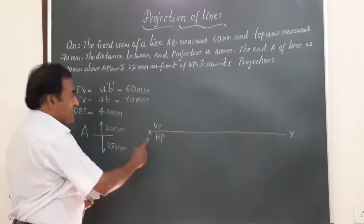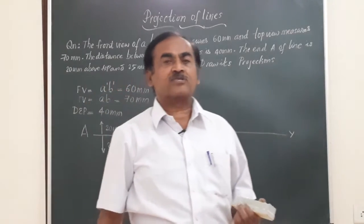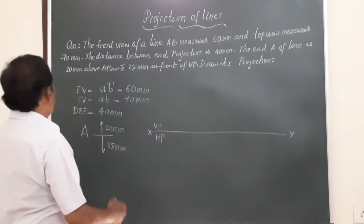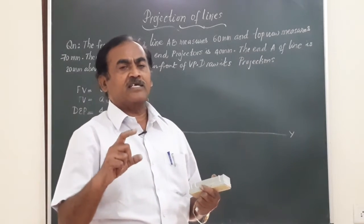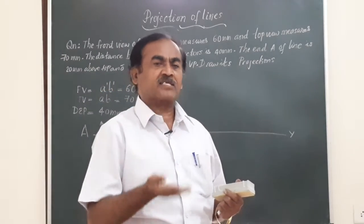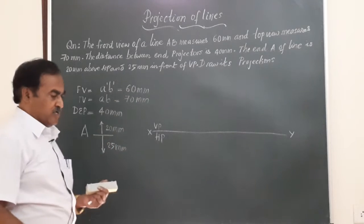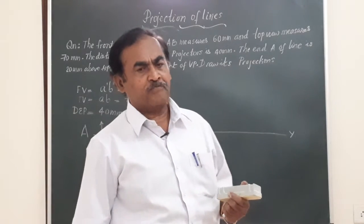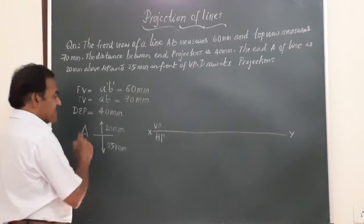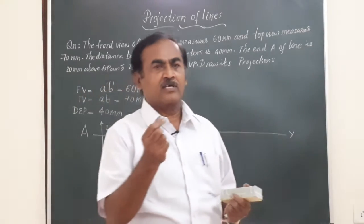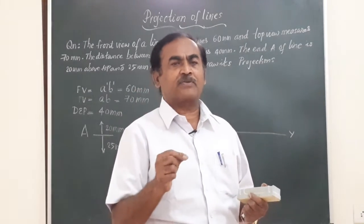The line of intersection of the vertical plane with the horizontal is called the XY line. Friends, in any problems on the projection of lines, one of the end points may be given. If the line is AB, they will give you the reference of point A with respect to HP and VP. It is preferable to start the projection with one of the end points. Here we have end point A. In first angle projection, its front view is represented as a' (A dash) and the top view is represented as a.